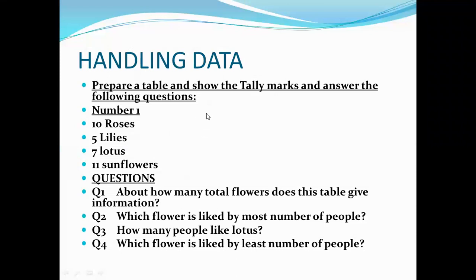The moment you come to number 5 you will draw a slant line. So it will be 1, 2, 3, 4 and then the slant line. Again 1, 2, 3, 4 and then the slant line. Accordingly you will write the number and answer the questions.